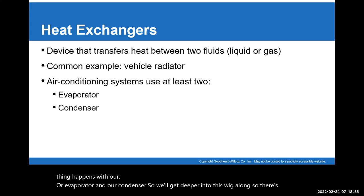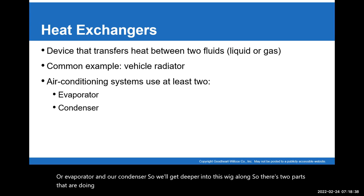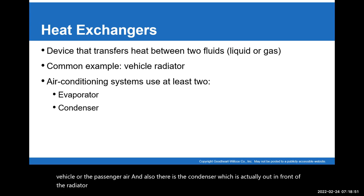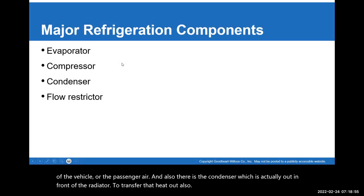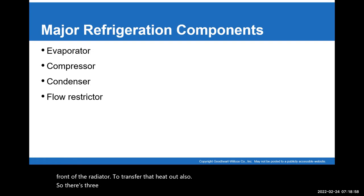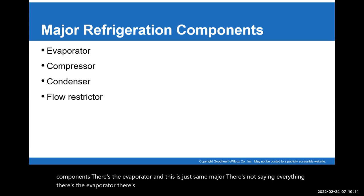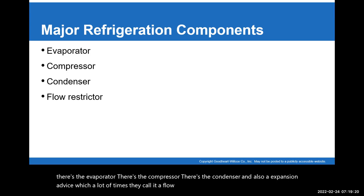There are two parts doing the heat exchanging: the evaporator, which is inside the cab or passenger area of the vehicle, and the condenser, which is out in front of the radiator to transfer that heat out. So there are actually four major refrigerant components: the evaporator, the compressor, the condenser, and the expansion device — which a lot of times they call a flow restrictor.